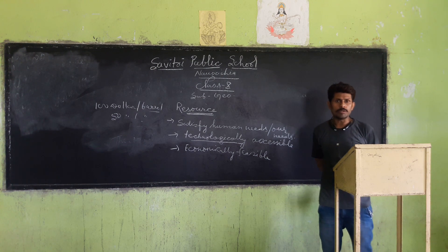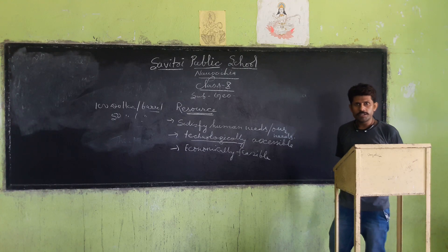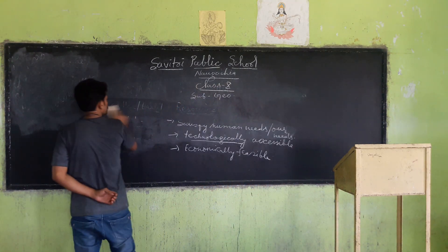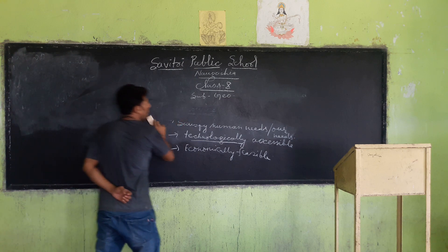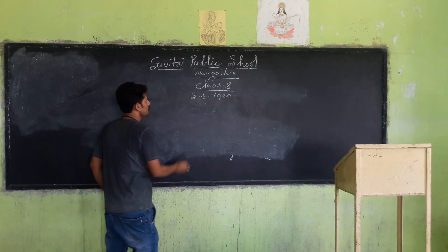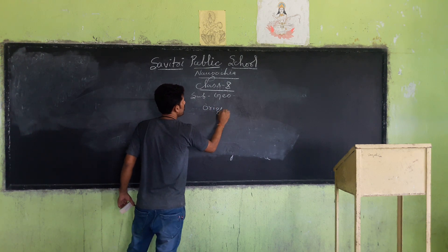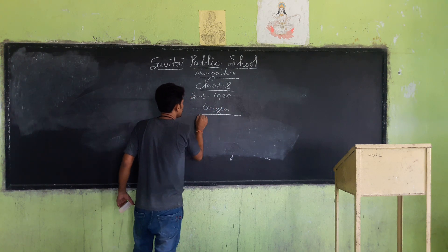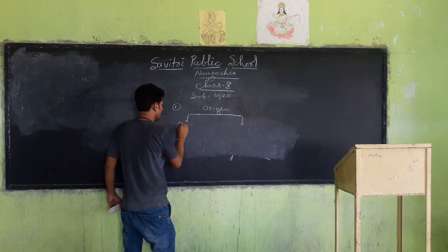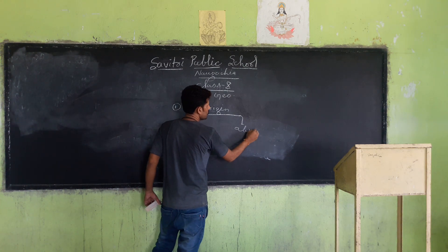On the basis of origin, resources are divided into two types: biotic and abiotic. On the basis of origin, resources are divided into two types — first one is biotic and second one is abiotic.